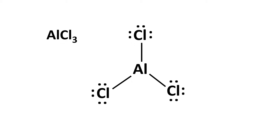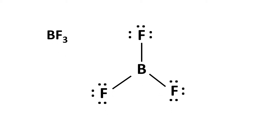Let's have a look at these compounds. The first one, we have AlCl3, with Al as the central atom. Al has 6 electrons as the central atom, which means it is not octet. The second one, we have BF3, with B as the central atom. B also has 6 electrons here.